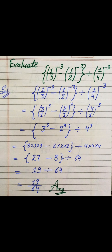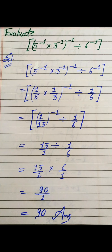We expand and multiply these: we get (27 − 8) divided by 64. After subtraction we get 19 divided by 64, which can be written as 19 upon 64. This is our final answer.